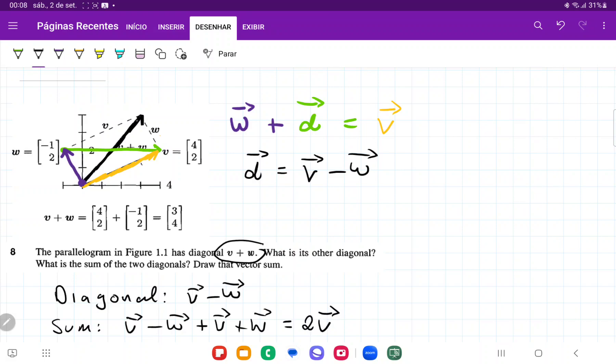And so now they want us to draw that vector sum. So I'm going to erase all these arrows. Basically, what we're going to do here is tip-to-tail addition. So if this is my diagonal, what I'm going to do here is just move it to the origin so I can do my tip-to-tail addition.